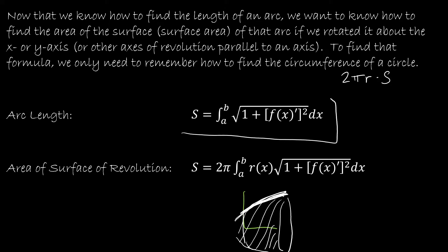Here's the arc length formula — I've only written the one in terms of x, but you know how to do it in terms of y. The only thing I have to do to change it to the area of the surface of revolution is multiply by 2π and then r(x). So r(x) is a function in terms of x that gives us the radius, which we're familiar with from finding volume. This part is exactly the arc length, so all we do is multiply it by the circumference of the circle.